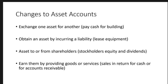Fourth, we can earn more assets by providing goods or services. We sell something and receive either cash or a promise to pay later, which is accounts receivable — still an asset. For example, we sell inventory that cost us two dollars for four dollars. We've exchanged an asset that cost two for cash or accounts receivable worth four. That's the idea of a retail business — we buy at one price and sell at a higher price to make a profit.